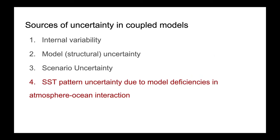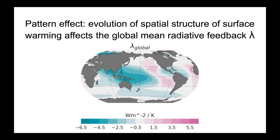Recent literature introduces another uncertainty: SST pattern uncertainty, which arises due to model deficiencies in atmosphere-ocean interaction. It shows up as mean state or climatological biases and also as trend biases — the inability of a coupled climate model to correctly simulate the SST pattern given a certain forcing. On top of this SST pattern uncertainty, there's also the pattern effect, which states that the evolution of the spatial structure of surface warming affects the global mean radiative feedback lambda.